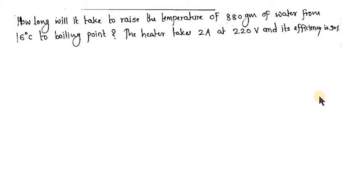Conceptually, the heater produces heat energy by taking electrical energy as input. The heat energy output from the heater is the heat energy input to the water. This input heat energy to water can be found using the formula for sensible heat: Q = m × s × ΔT, where the entire heat energy is absorbed by the water.